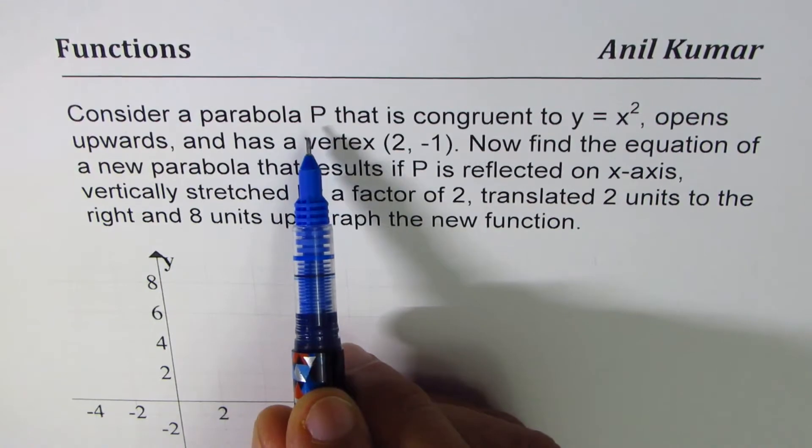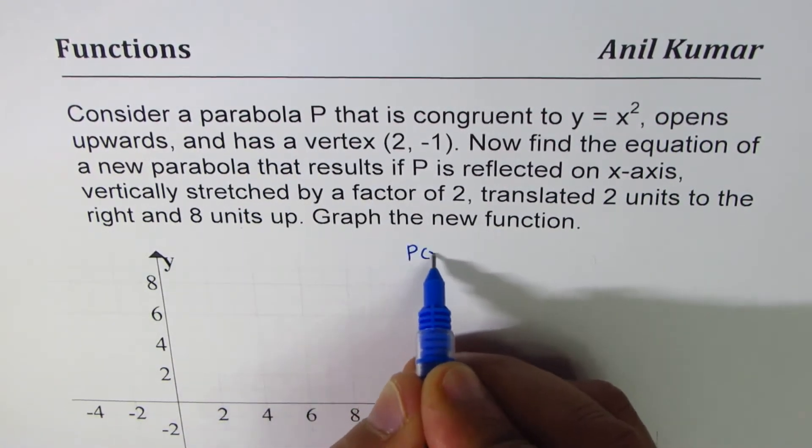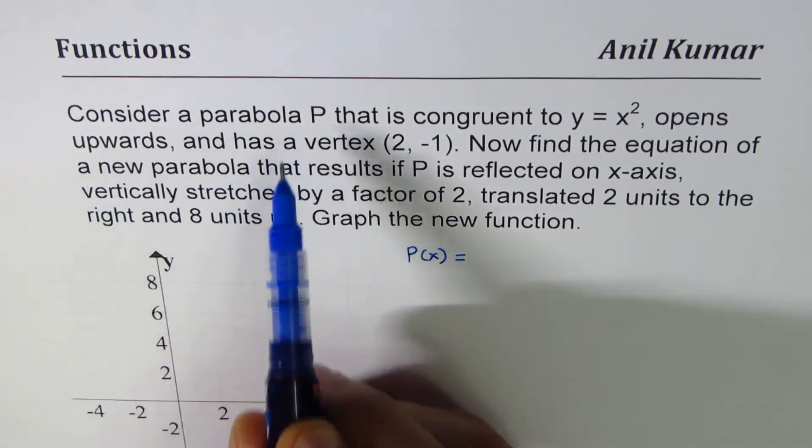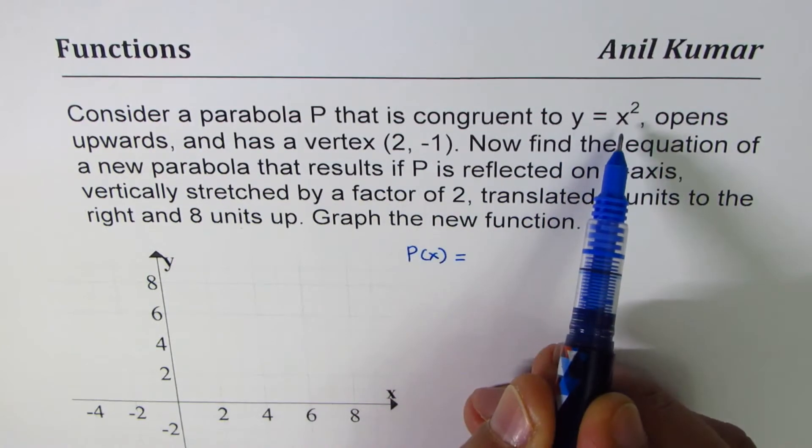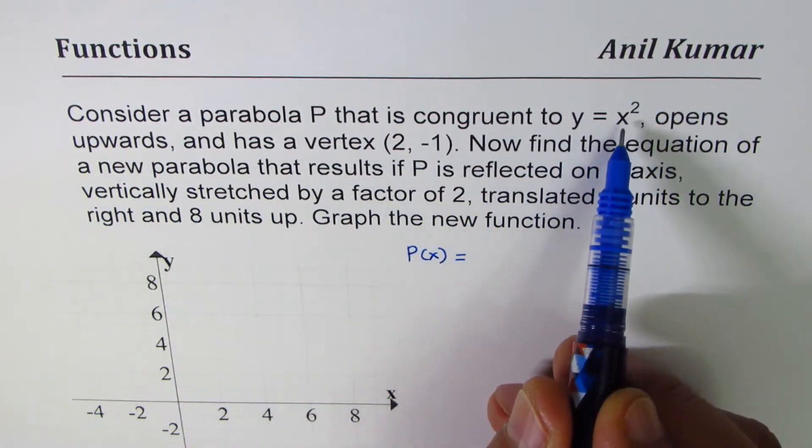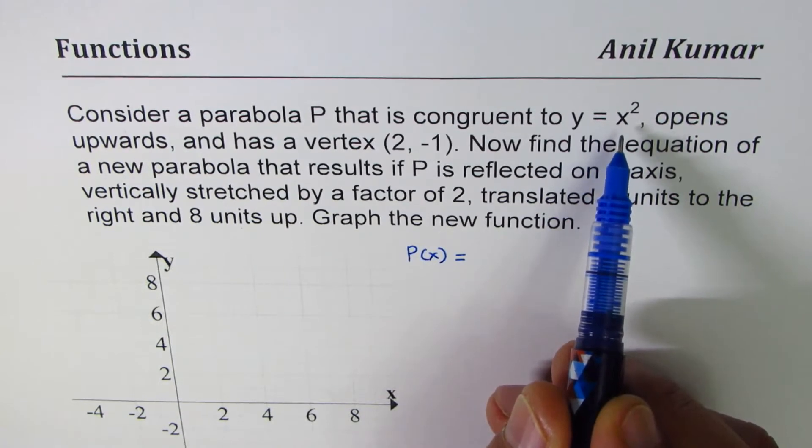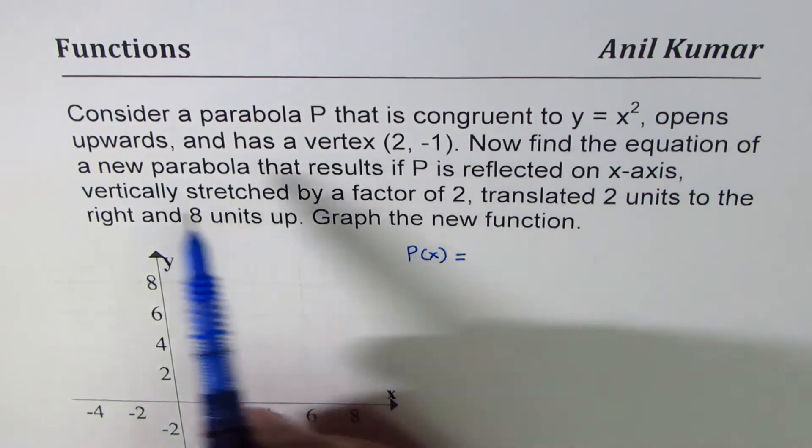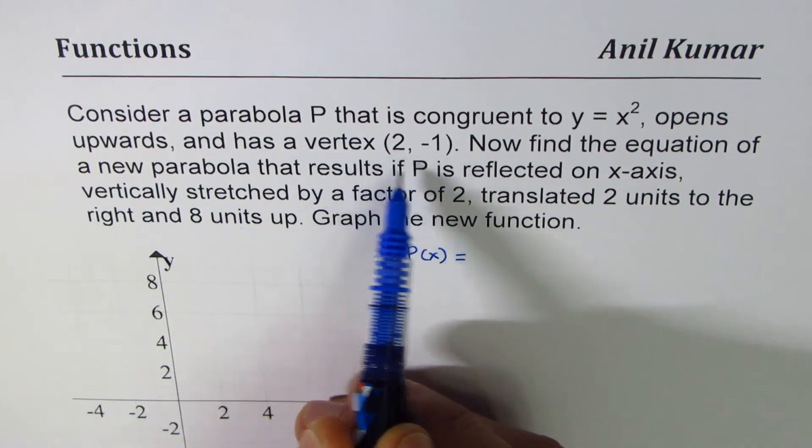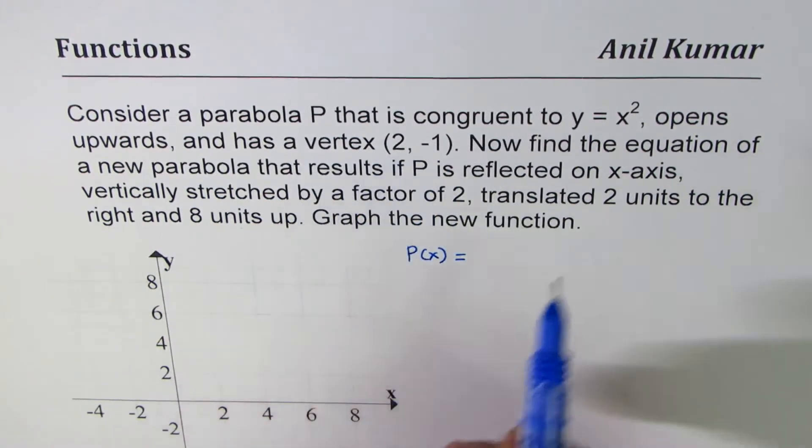Let's write down the equation for parabola P first. So P(x) is equal to what? So it is a parabola that is congruent to x², opens upwards. When we say congruent to x² means there is no vertical stretch or compression, nor horizontal stretch or compression.